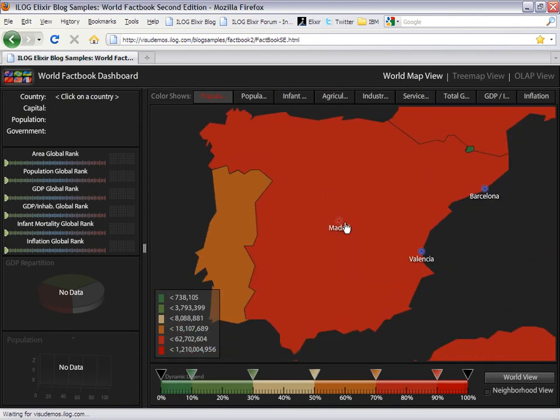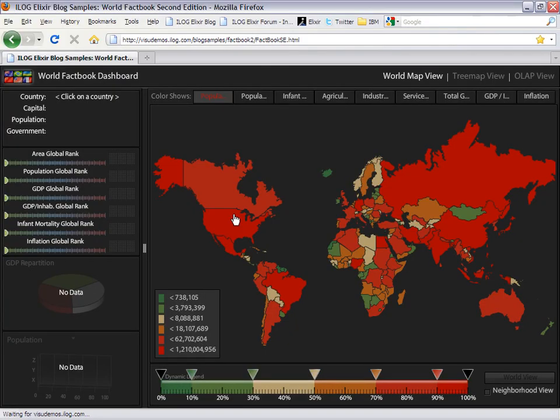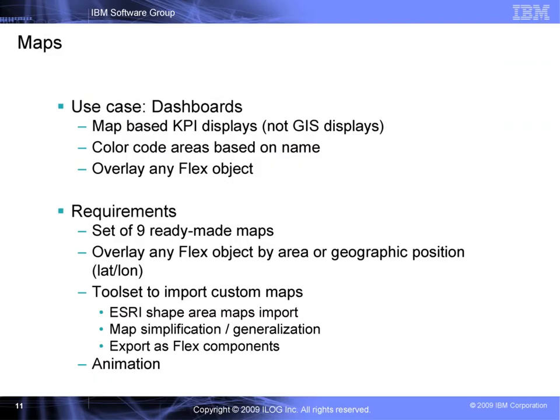We'll now have a look at the vector maps. The requirement here was again dashboards and BI reporting displays. This module displays vector maps you can color-code according to custom data, stock levels, or product revenues. You can also overlay any Flex object such as charts or labels, either by location — Texas, France, or China — or by geographic position in longitude and latitude. We ship some ready-made maps, but the core value lies in the custom map converter. With Elixir, you can transform any map in any SVG format you downloaded or purchased into a Flex component. In other words, you are not limited to the maps we provide. In that transformation process, there is a simplification step that shrinks the map size while keeping its appearance for faster downloads and more efficient animations.